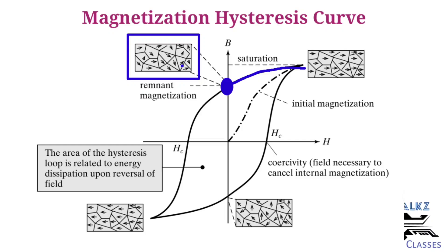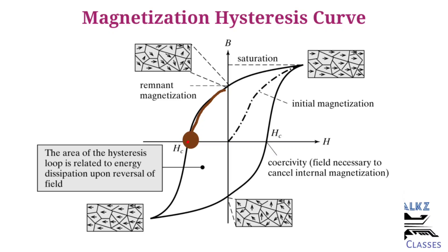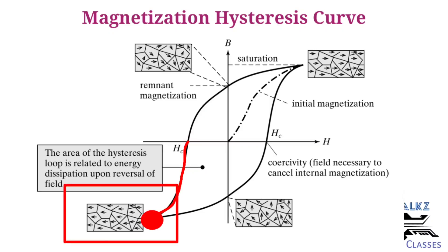If you apply a magnetic force in the opposite direction, the flux lines will collapse. At this point, capital B will become zero. If you continue applying the magnetic force in the same direction, flux lines are created again but in the opposite direction. We will create opposite flux lines, and at this point it will again saturate — that is the negative saturation point.